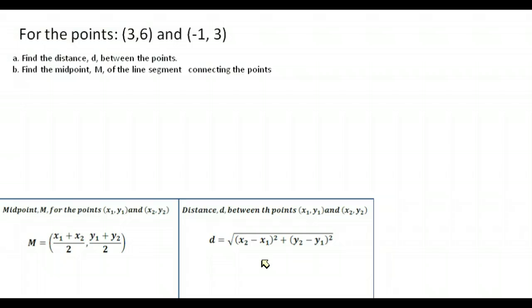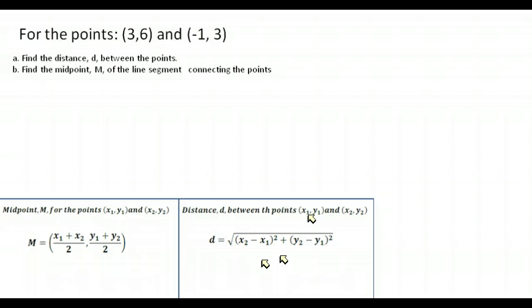We're doing distance first — the distance between two points x1, y1 and x2, y2. The little one and two just mean the x from the first point, x from the second point, and so on. What we do is take the square root of the x values subtracted and squared, plus the y values subtracted and squared, then take the square root of that entire quantity. It's important to work carefully because it's easy to make mistakes.